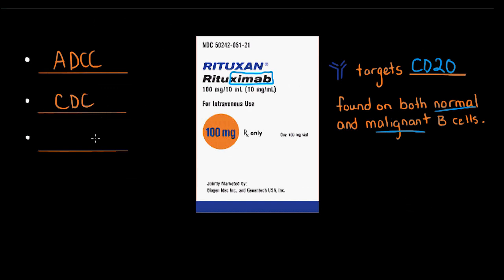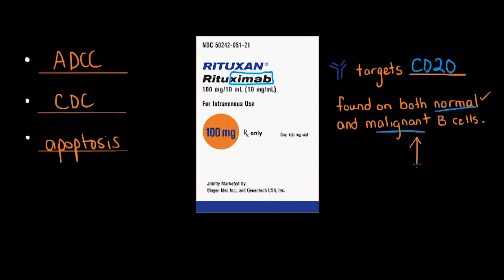Binding of this antibody also signals the cell to self-destruct, known as apoptosis. The primary function of Rituximab is to lower the number of B cells in your system, including healthy B cells. However, your body will produce new healthy B cells to replace these, so ultimately the cancerous B cells are less likely to recur.